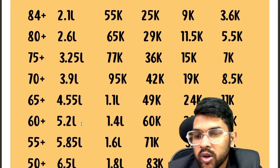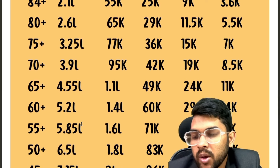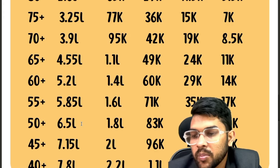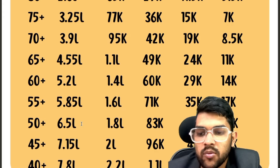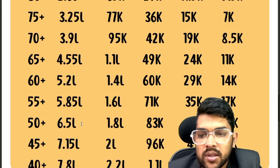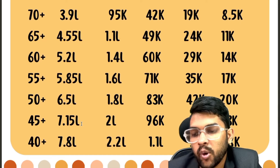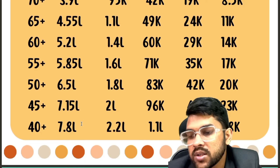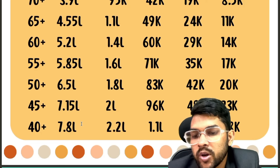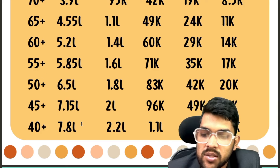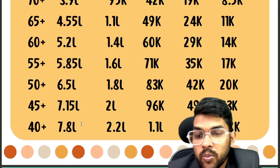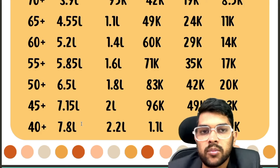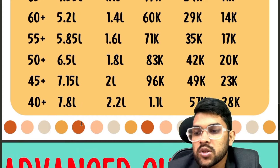For 60 percentile: General 5.2 lakh, OBC 1.4 lakh, EWS 60000. For 55: General 5.85 lakh, OBC 1.6 lakh, EWS 71000. For 50: General 6.5 lakh, OBC 1.8 lakh, EWS 83000. For 45: General 7.1 lakh, OBC 2 lakh, EWS 96000. For 40: General 7.8 lakh, OBC 2.2 lakh, EWS 1.1 lakh. SC and ST can be checked in the last two columns.